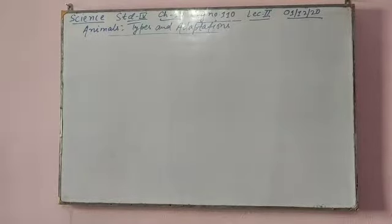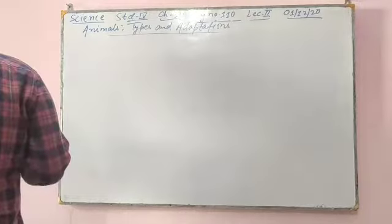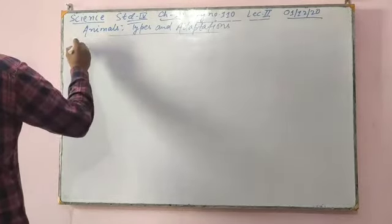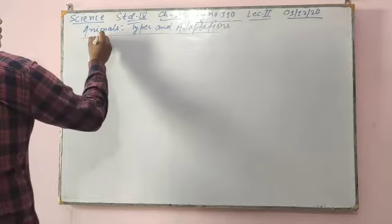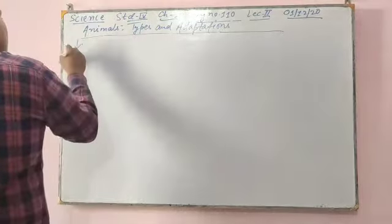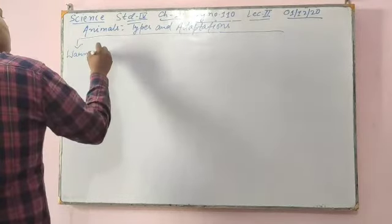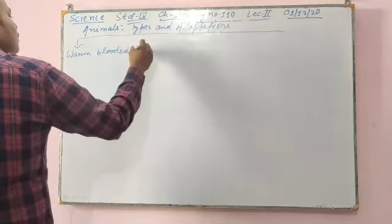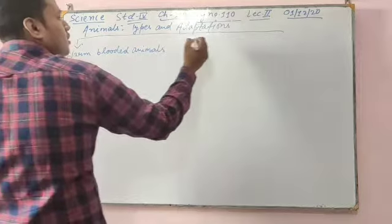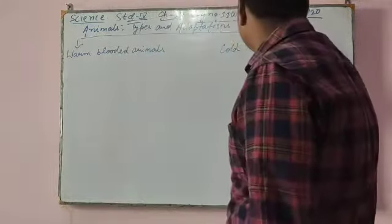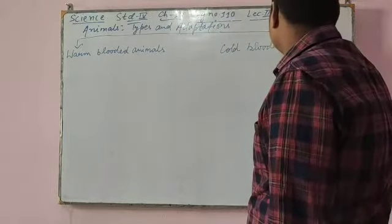Now coming to action number two. The topic is warm-blooded and cold-blooded animals. So we have warm-blooded animals and cold-blooded animals.